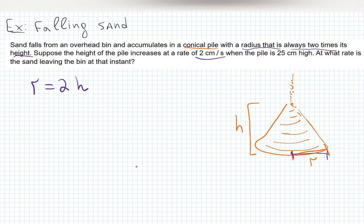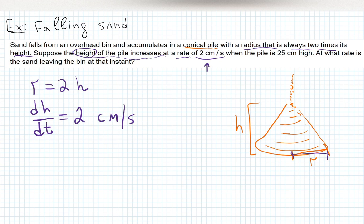If you see a slash or 'per,' that means some kind of derivative is given. The keyword 'increases at the rate' tells me something is changing. Going back, I see 'height' — the height is changing and is increasing. So that means the derivative of height with respect to time, dh/dt, equals two centimeters per second.